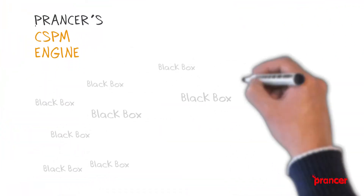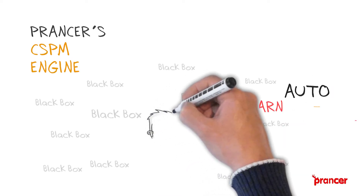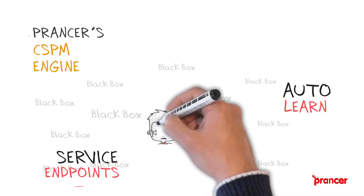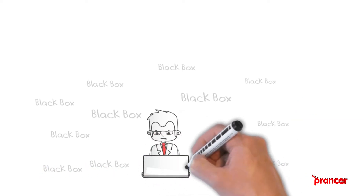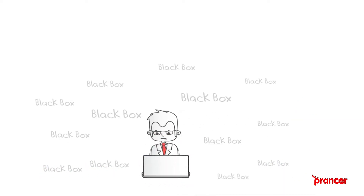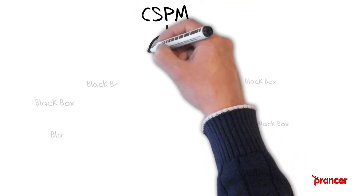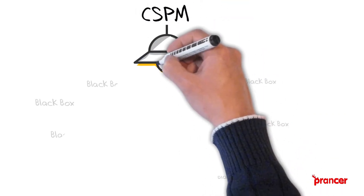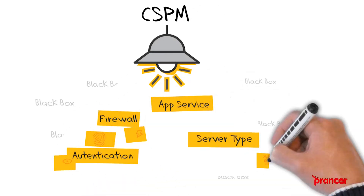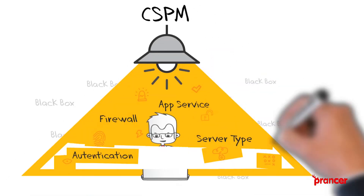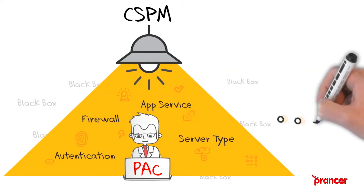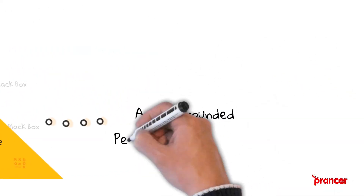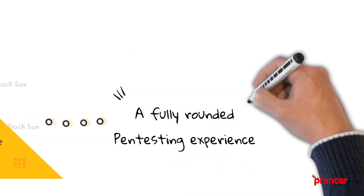PAC uses Prancer's CSPM engine to auto-learn the application and service endpoints hosted in your cloud networks. PAC seamlessly runs authenticated and unauthenticated testing out of the box from trusted or untrusted networks. PAC provides custom capabilities for injecting custom threat vectors into code to test both white box and black box scenarios, giving you a fully rounded pen testing experience.